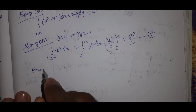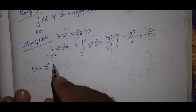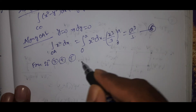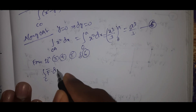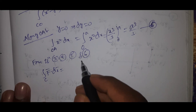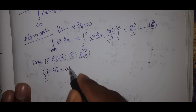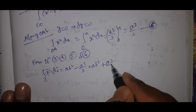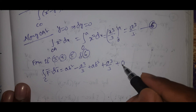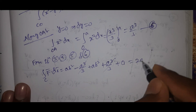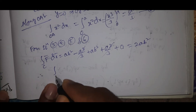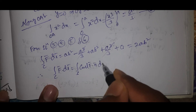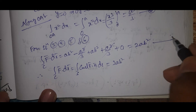From equations 3, 4, 5, and 6: integral over C of F̄·dr̄ = ab² + (-a³/3 + ab²) + 0 + a³/3. The a³/3 terms cancel. That equals 2ab². Therefore integral over C of F̄·dr̄ = integral over S of curl F̄·n̄ dS = 2ab². This is equation number 7.